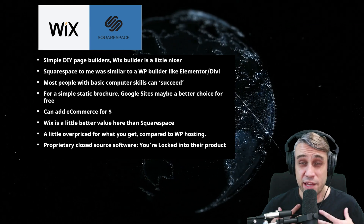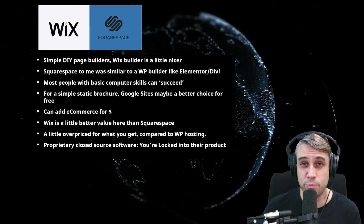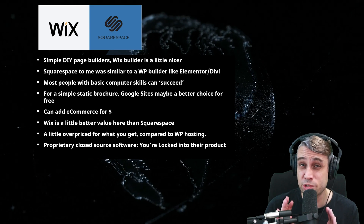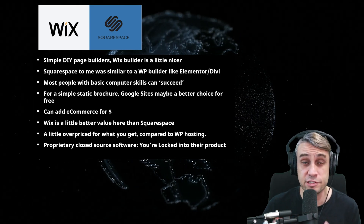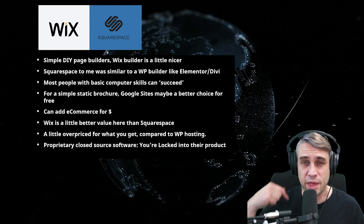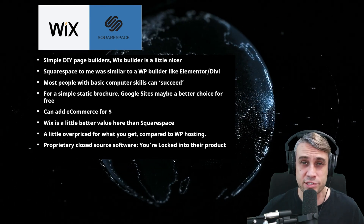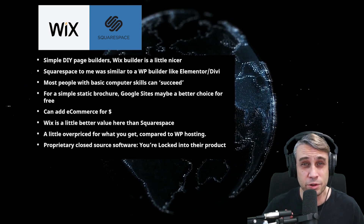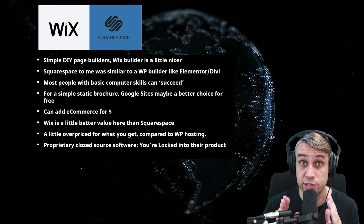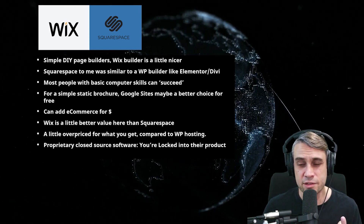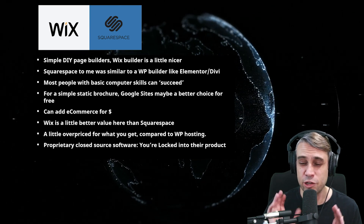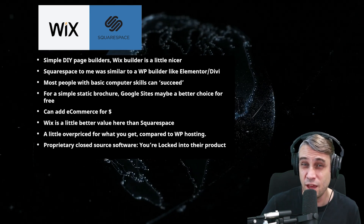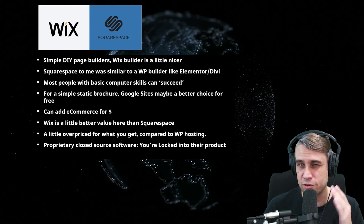The idea is that most people with basic computer skills can get a decent-looking webpage together without professional assistance. For a static brochure-type website, you can actually get a similar result using Google Sites for free. I've done a tutorial on Google Sites — you can get a quite nice static website and even use a custom domain name, saving money if your needs are fairly simple. You can also add e-commerce on Wix and Squarespace, and I've shown ways to add e-commerce to Google Sites as well.